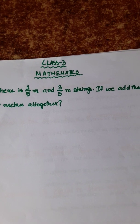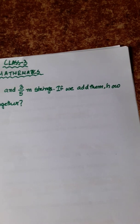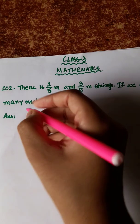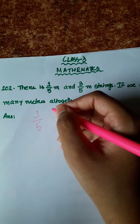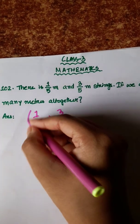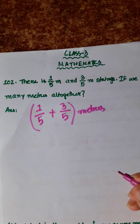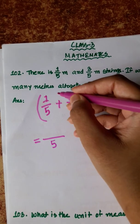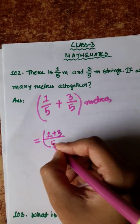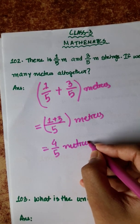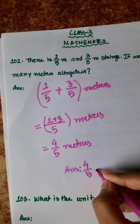Question 102: There is a 1/5 m and a 3/5 m string. If we add them, how many meters altogether? So, 1/5 plus 3/5 — when adding fractions with the same denominator, we add the numerators: 1 plus 3 equals 4. So the answer is 4/5 m.